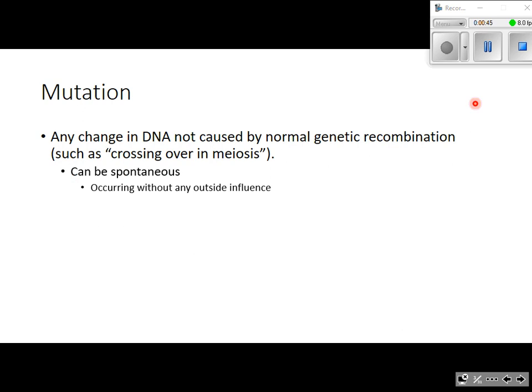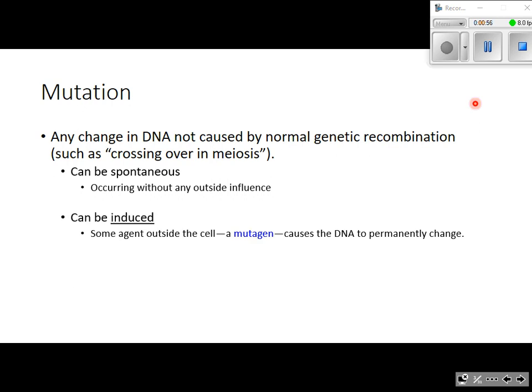Mutations can be spontaneous, meaning they are totally unpredictable — nothing is really causing it to happen, it's just a random, unpredictable genetic change. But some mutations are induced, which means there's some outside agent that is either causing the mutation or increasing the likelihood that it will occur. Any outside agent which increases the likelihood of a mutation is called a mutagen.